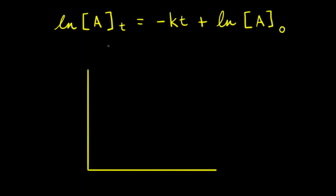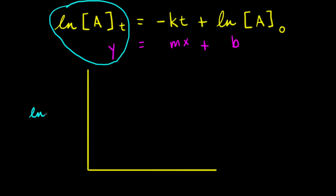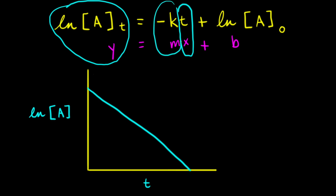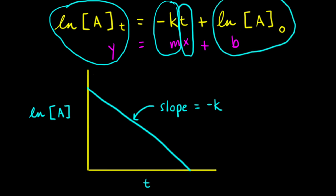Notice how the integrated rate law has the form of y = mx + b, which is the equation for a straight line. So if we were to graph the natural log of the concentration of A on the y-axis and time on the x-axis, we would get a straight line. The slope of that straight line would be equal to negative k, and the y-intercept would be equal to the natural log of the initial concentration of A — the point where the line meets the y-axis.